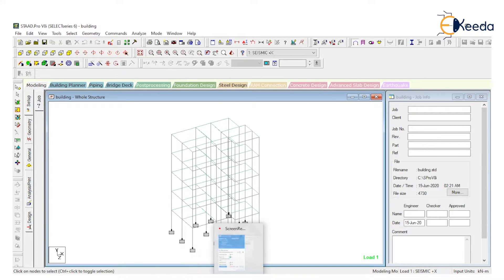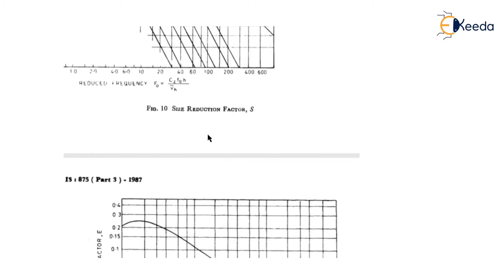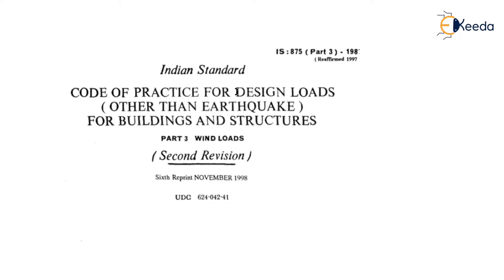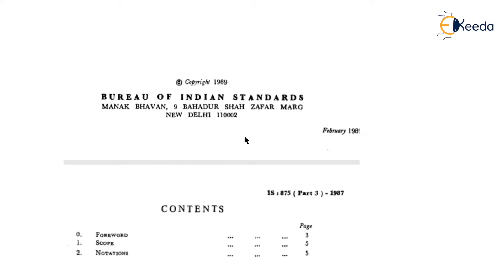This is the code of practice for design loads other than earthquake for buildings and structures. Part 1 is for dead load, Part 2 is for imposed load or live load, Part 3 is for wind load, Part 4 is for snow load, and Part 5 is for special loads and load combinations.